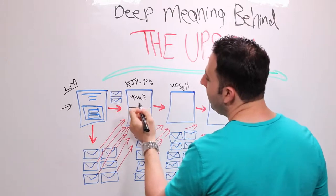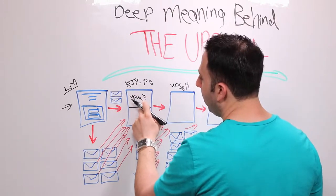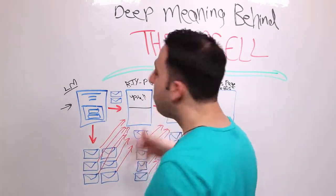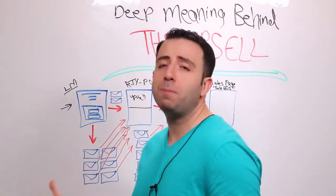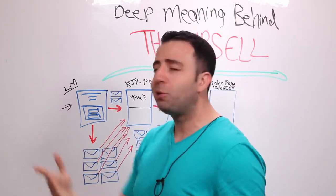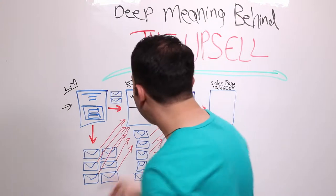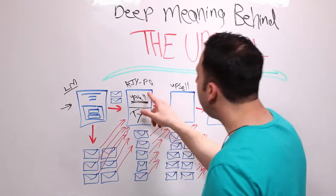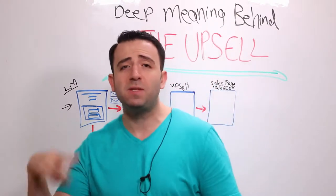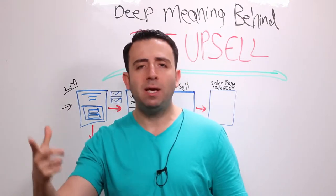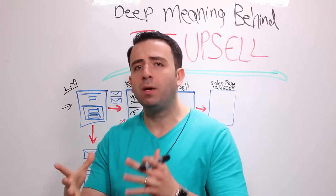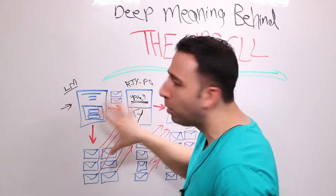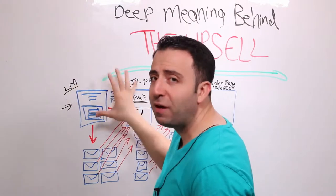They're going to see either one of two pages: first the upsell, and if they take it, awesome. If they don't, they see the report thank you page — basically saying, thank you for opting in; if you don't want the upsell that's fine, please check your email and download the report. If they do take the upsell, they see an upsell thank you page that gives them access to the plugin and the report, with a timer to download before it expires.